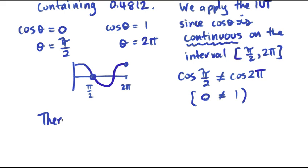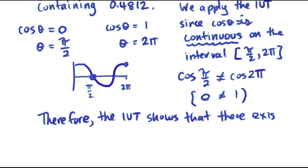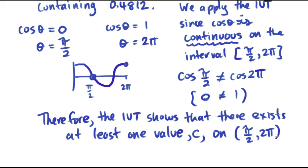Therefore, the IVT shows that there exists at least one value, now usually it's called c, and in this case we want our c value to be 0.4812, on the interval from π/2 to 2π such that f of that c value is equal to 0.4812.